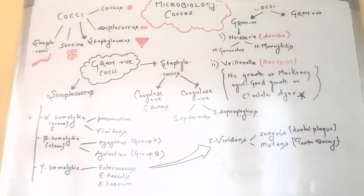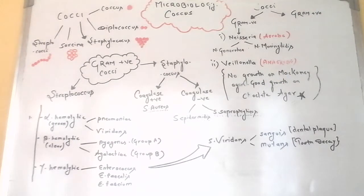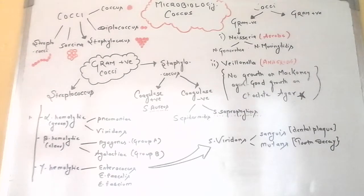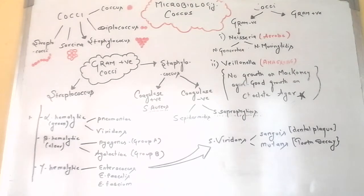It is estimated that around 1 in every 4 pregnant women have strep B bacteria in their vagina or digestive system. The bacteria can sometimes be passed on to the baby through the amniotic fluid — the clear liquid that surrounds and protects the unborn baby in the womb — or as the baby passes through the birth canal during labor. Strep B infection during pregnancy can cause miscarriage and stillbirth, though this is rare.